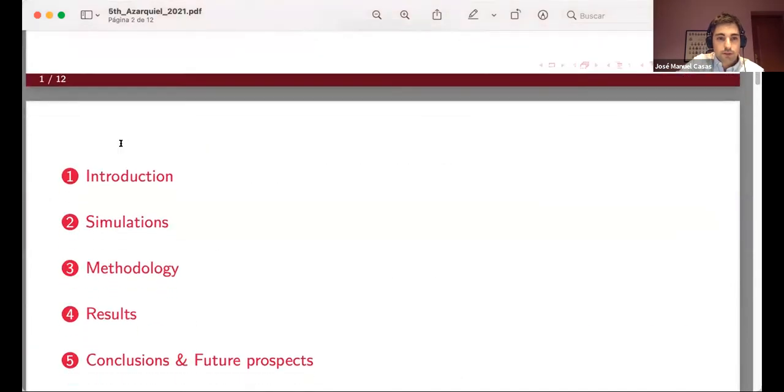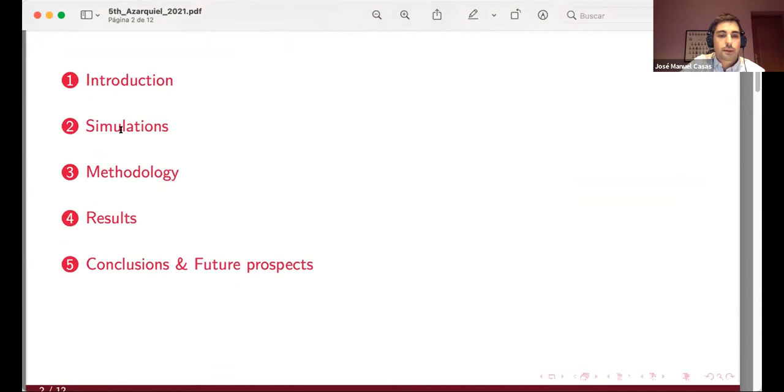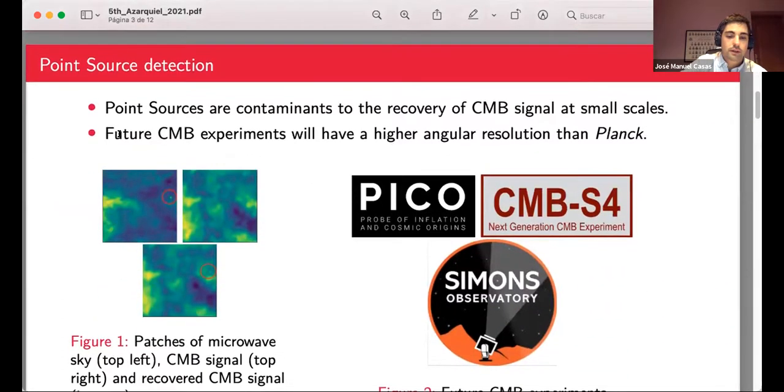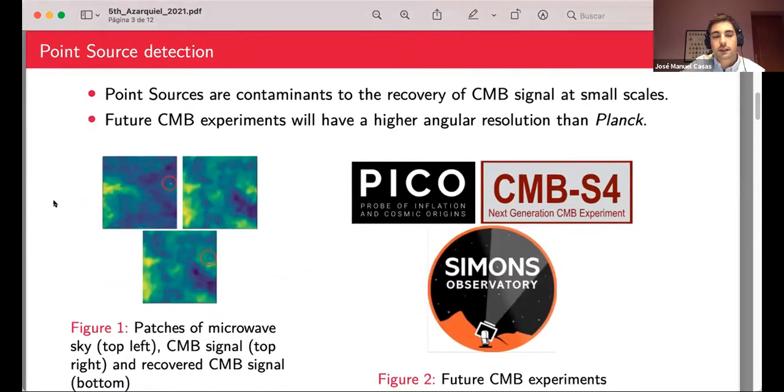First of all I will introduce the problem. After that I will talk about the simulations and the methodology used. And finally I will show the results and our conclusions. Well, the point source detection is one of the main issues for Planck successors, such as the PICO, the CMB-S4, or the Simons Observatory. Since they will have a higher angular resolution than Planck, and as we know, point sources are one of the main contaminants to the recovery of CMB signal at small scales. Therefore we need to develop more accurate and reliable methods to detect them.